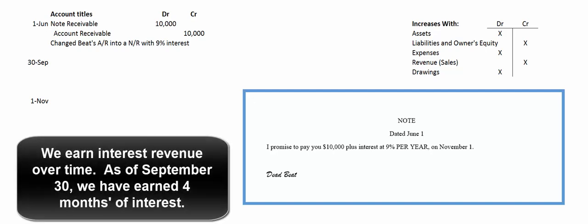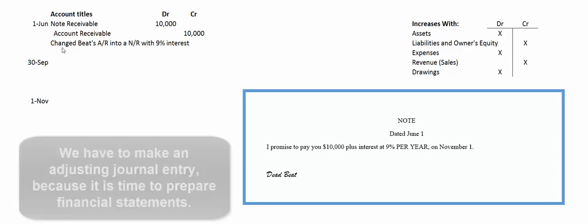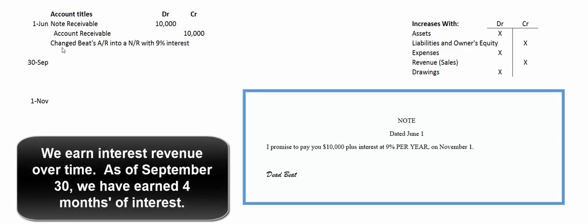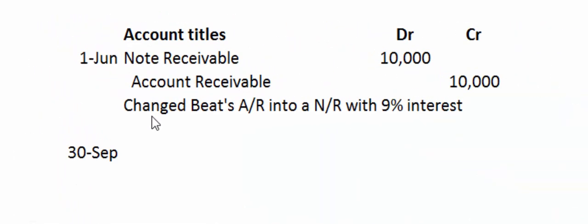Let's pretend it's September 30th, so four months have gone by — June, July, August, and September. We have to prepare an income statement and a balance sheet. He hasn't paid us any interest yet, but we've earned four months worth of interest. So we're going to have to debit interest receivable and credit interest revenue. Pause this video and see if you can figure out how much four months worth of interest is on this $10,000, 9% note.